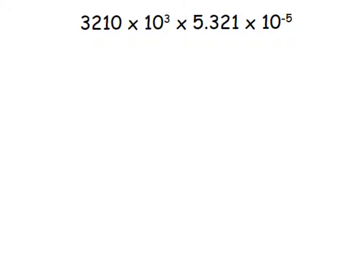This video is designed to help you with leading digit estimation or approximation — taking a fairly complicated set of multiplications and divisions and getting an approximate or rounded answer using leading digit techniques. When looking at 3,210, we only want to round it to that leading digit, and for 5.321, we only want to look at the leading digit. Our goal is to get a rough range for the answer.